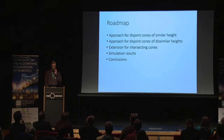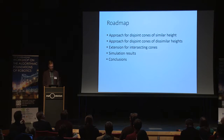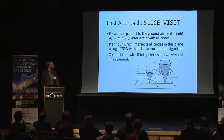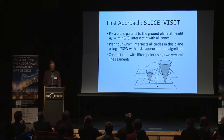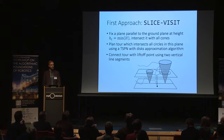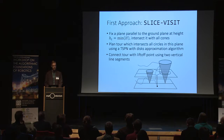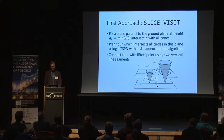I'm going to talk about our approach for disjoint cones of similar height, and then what we do when the heights can be widely different, as well as when the cones intersect. The first approach, which we call slice visit, fixes a plane parallel to the ground at height h_t, which is the minimum height of any of the input cones. We intersect this plane with all the cones, producing a set of disks, and then plan a tour in this plane. We can find a tour of the disjoint disks using a PTAS, and connect the tour with the lift-off point using two vertical line segments.